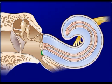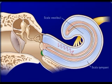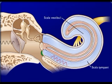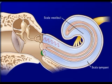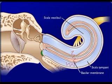Vibration of the footplate causes the perilymph in the scala vestibuli to vibrate, which in turn causes displacement of the basilar membrane.